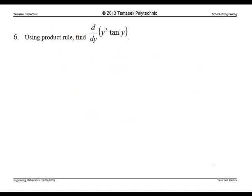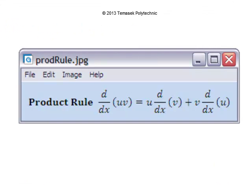Question 6 uses the product rule to find the derivative of y cubed tangent y. This is the formula for the product rule. If we differentiate the functions u times v, then we differentiate v first times u, plus, then differentiate u times v.